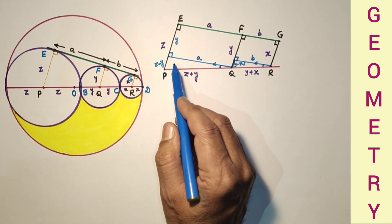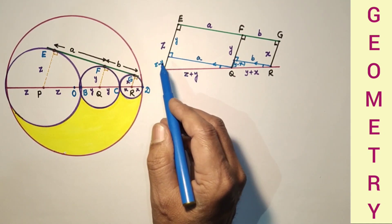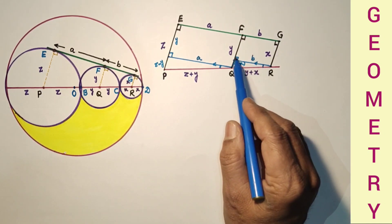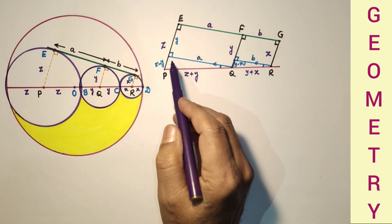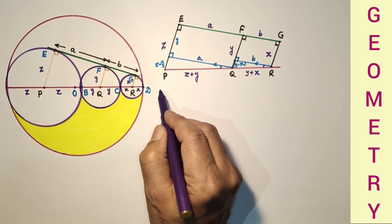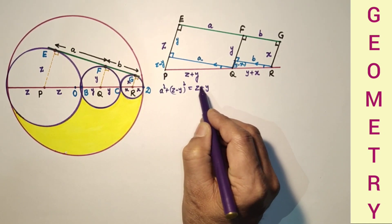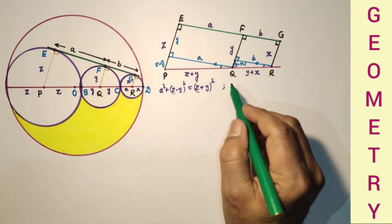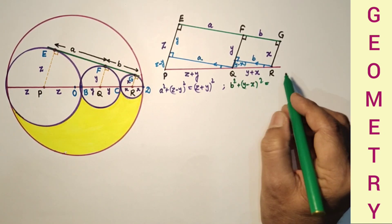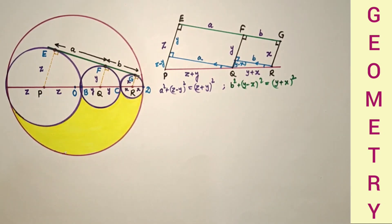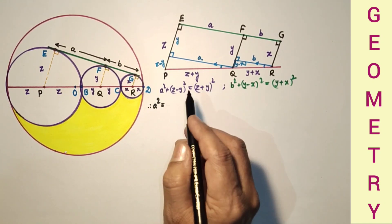If we use the Pythagorean theorem in the first triangle, we get A² plus (Z minus Y)² equals (Z plus Y)². And using the second triangle, B² plus (Y minus X)² equals (Y plus X)². Simplifying the first equation: A² equals (Z plus Y)² minus (Z minus Y)².